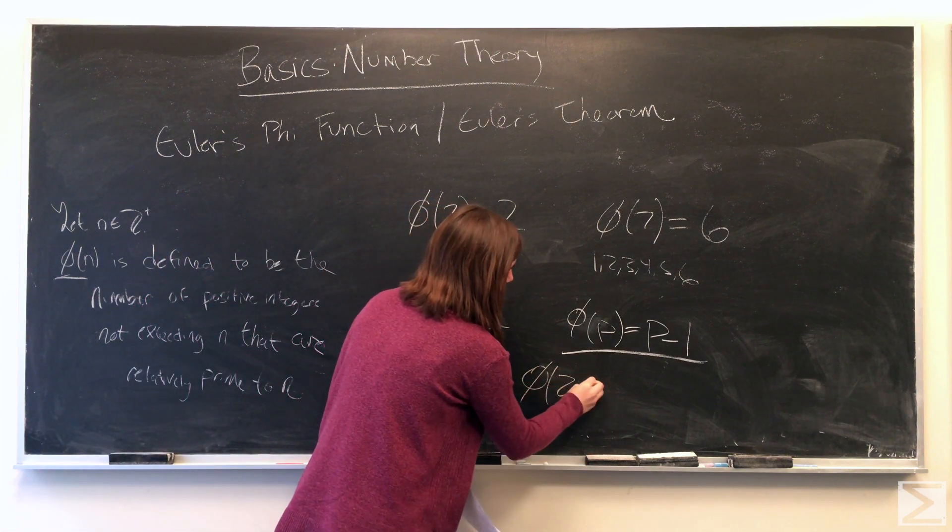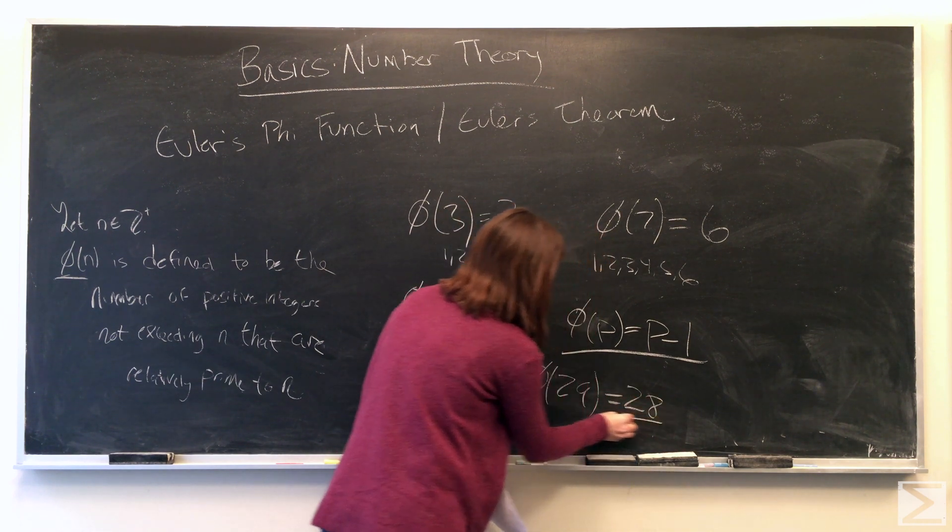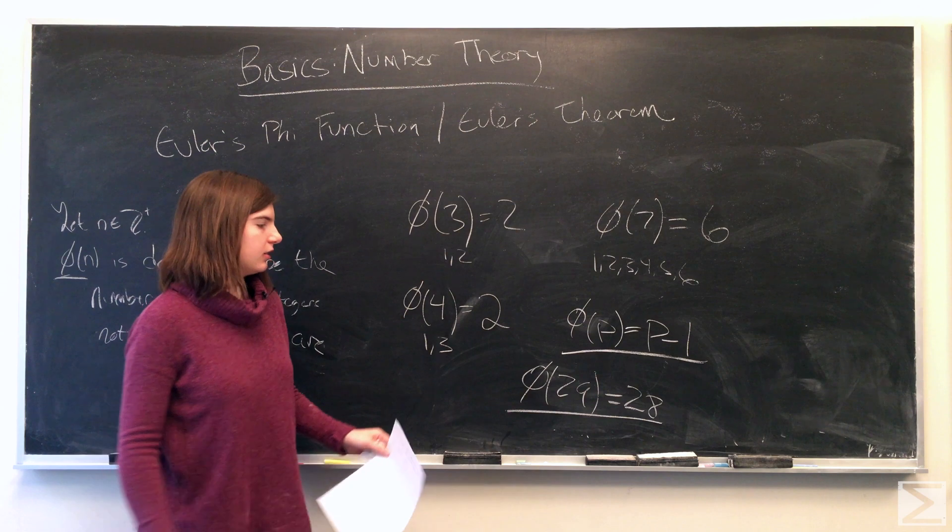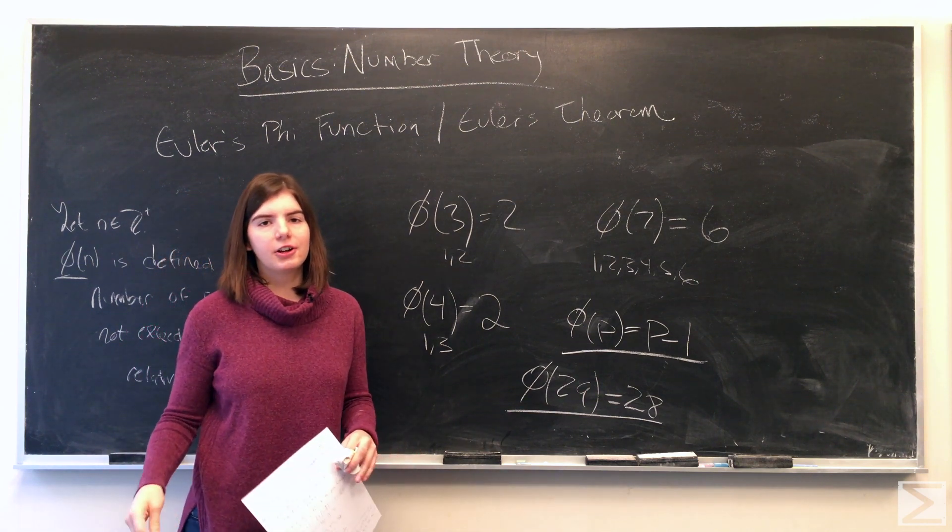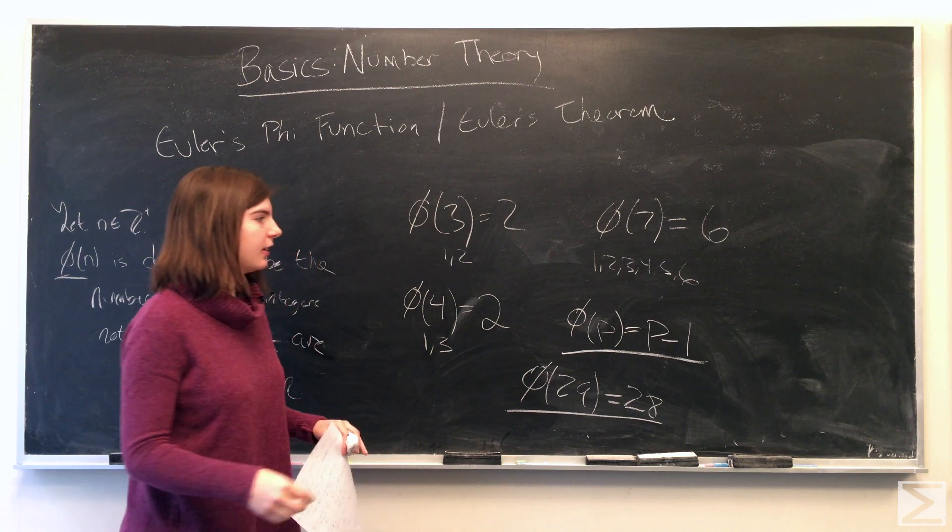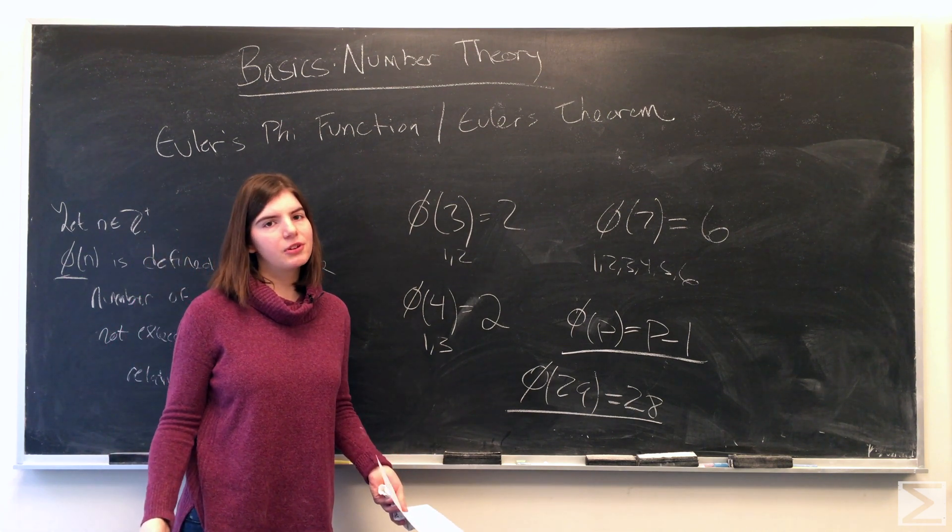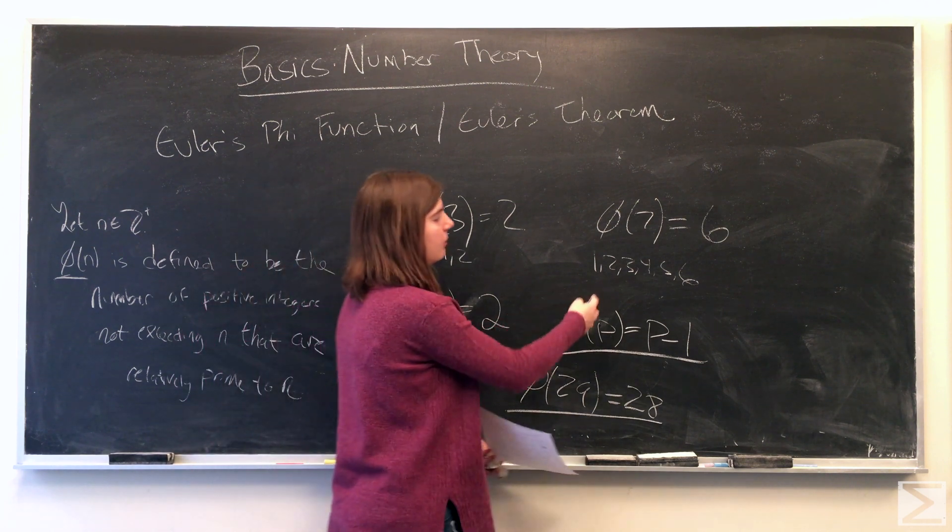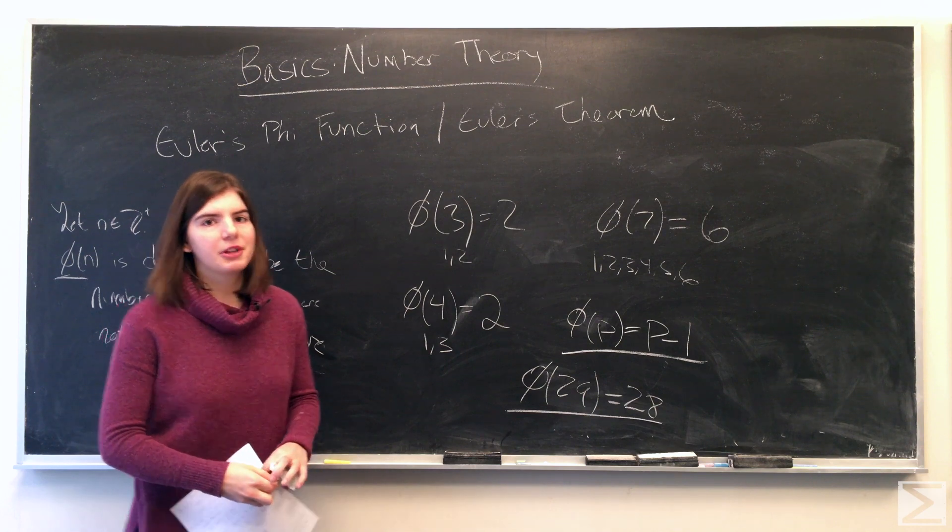The phi of 29 is 28. So it's easy to calculate large prime numbers, but sometimes if you want to calculate the phi of large composite numbers, you don't want to be writing out all the numbers and figuring out which ones are relatively prime. So we have other formulas.